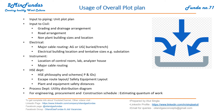For process, the department can finalize their utility distribution diagrams based on the overall plot plan. They can also put together the engineering, procurement, and construction schedule and estimate the quantum of work. So this overall plot plan is a very important document in any project because every discipline is getting some information from it.